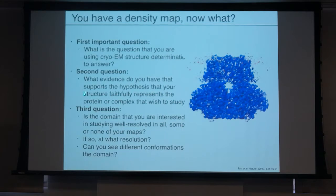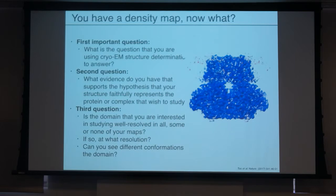This goes to the second question: what evidence do you have that supports the hypothesis that your structure faithfully represents the protein or complex that you wish to study? If you're trying to get a complex of a membrane receptor with a drug bound, you need to make sure that the drug is actually there. You probably want an orthogonal experiment showing that you have a KD sufficiently high that, at the concentration of drug you're adding, it's actually going to bind at some reasonable occupancy.